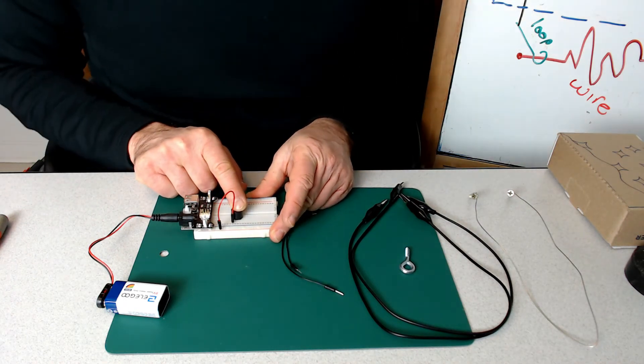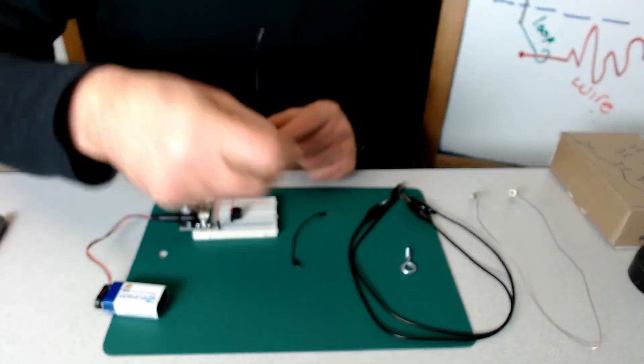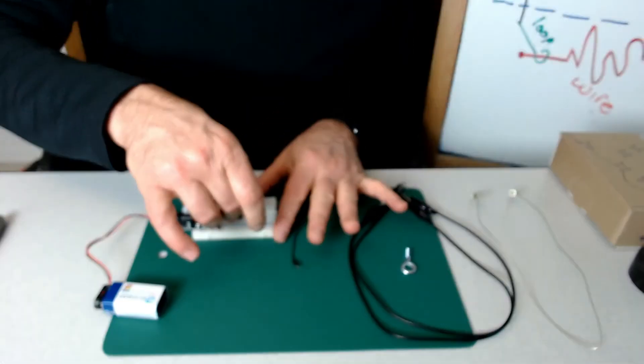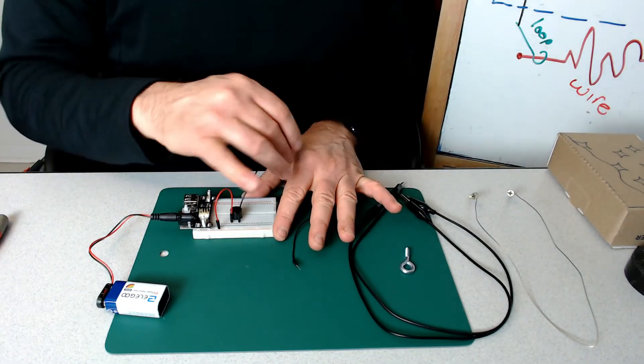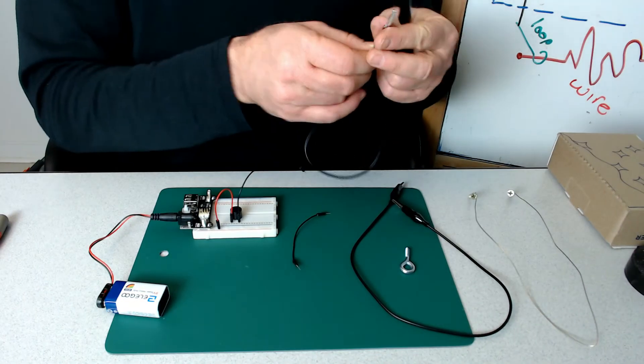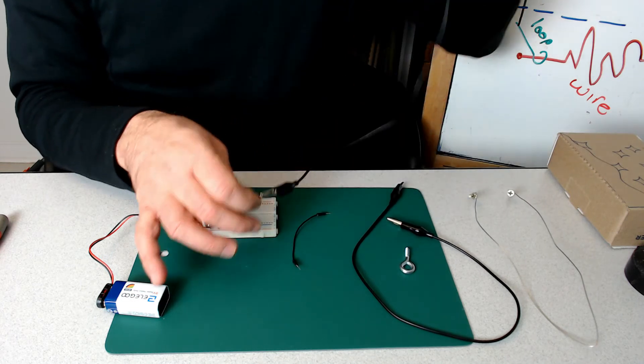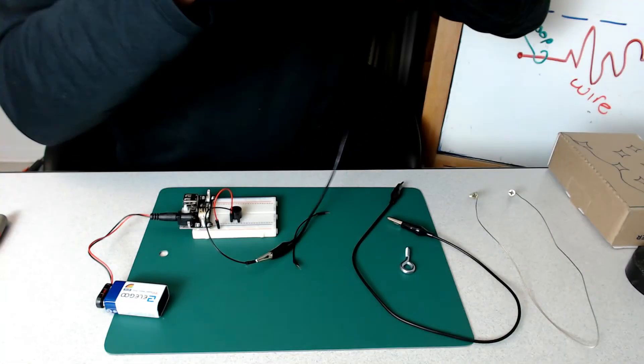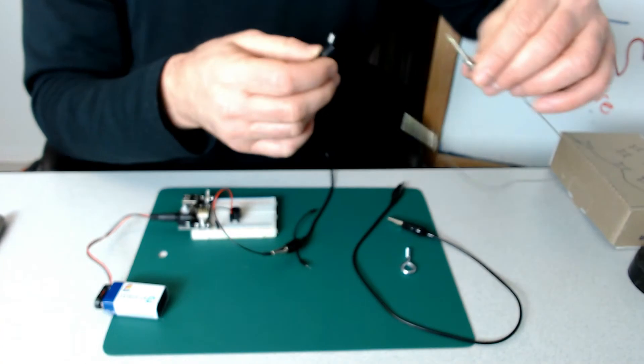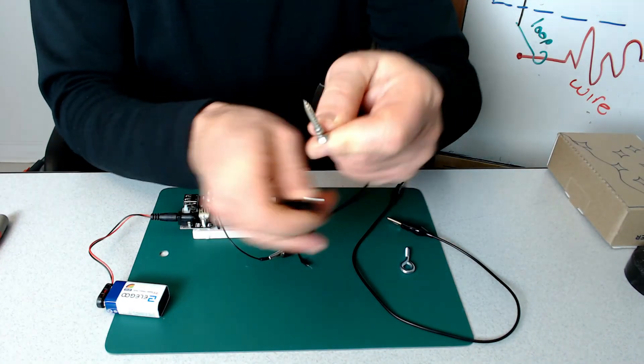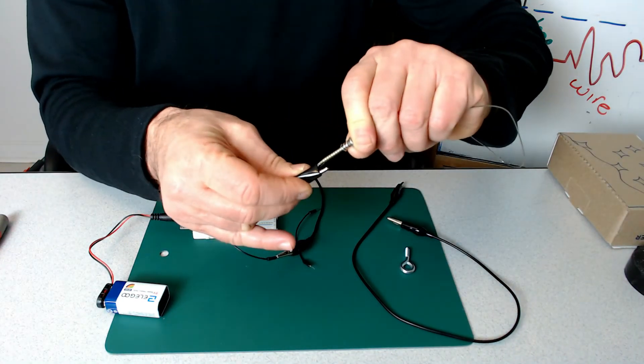We'll connect the other side of the buzzer, row number 17, to another wire, and connect this wire to one of our alligator clip wires. We'll then connect the other alligator to our flexible wire.